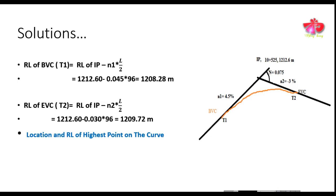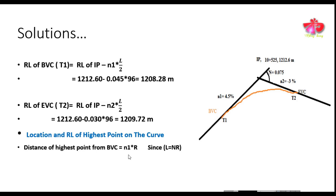To find the highest point on the curve, we locate it at distance X from the BVC using the formula: X = N1 × R, where R = L/N. Substituting N1 = 0.045 and R = L/N, we get the distance of the highest point from BVC as 115.2 meters.